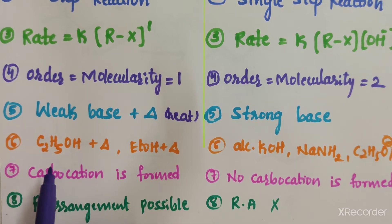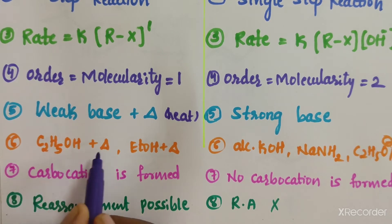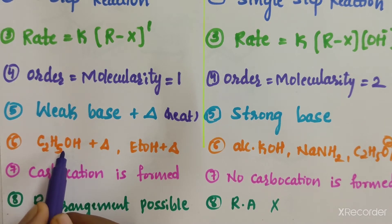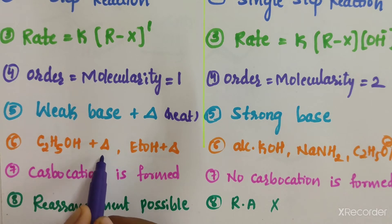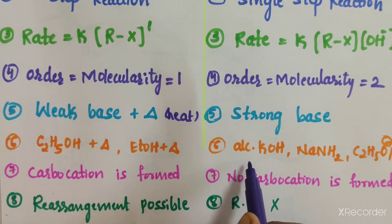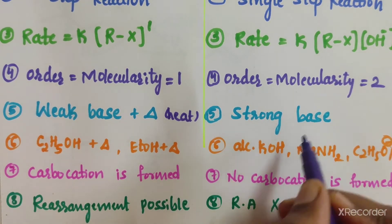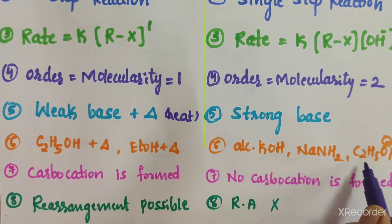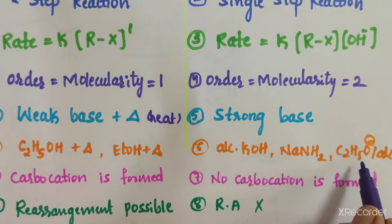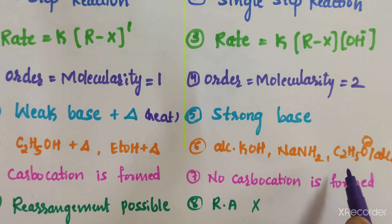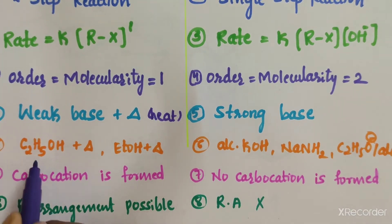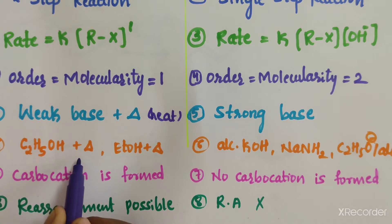For E1, the base can be something like C2H5OH (ethanol), which is a neutral molecule acting along with heating. We write it as EtOH with heating. For E2 elimination reaction, we require strong bases like alcoholic KOH, sodamide, or C2H5O⁻ in the presence of alcohol. Strong base gives E2; weak base with heating gives E1.